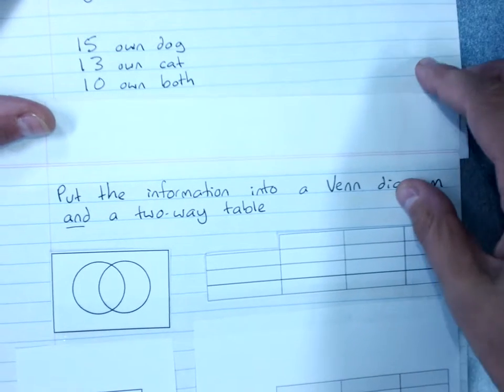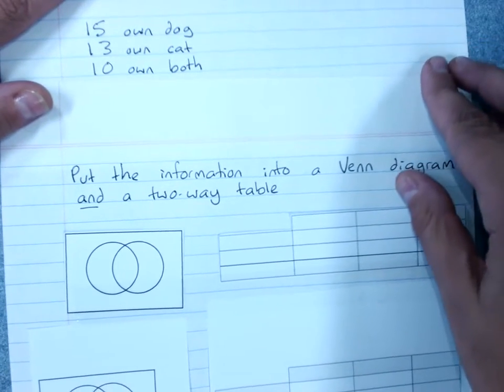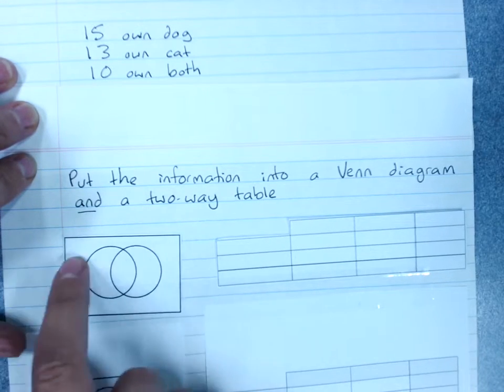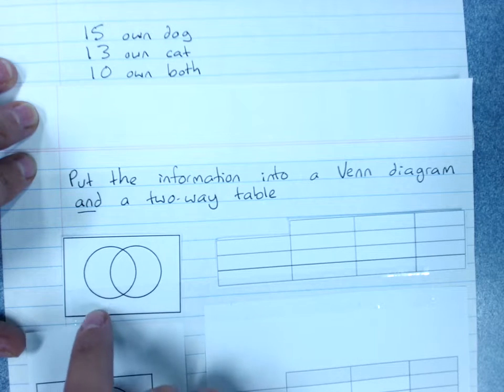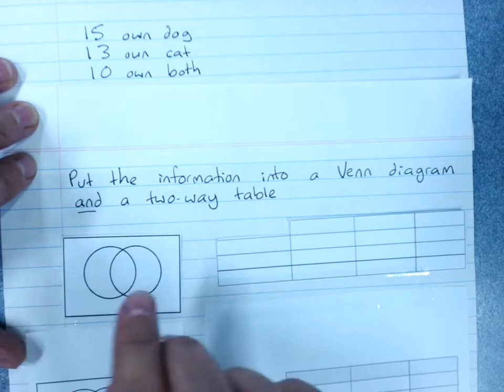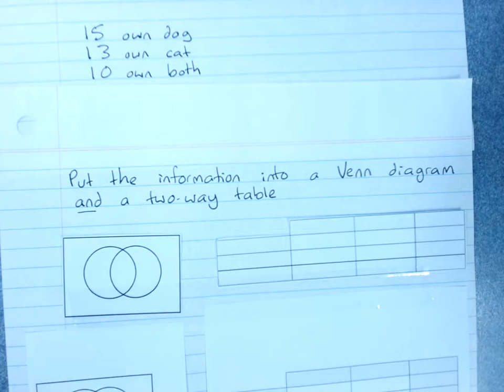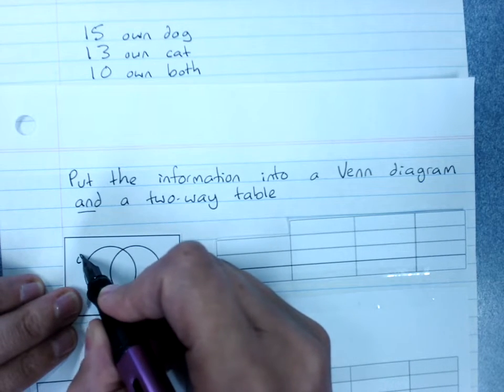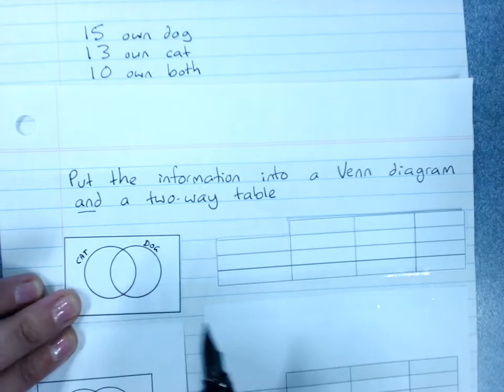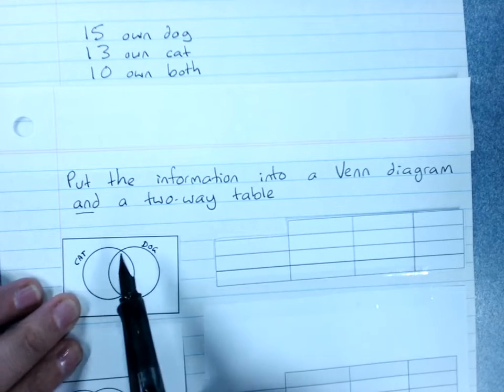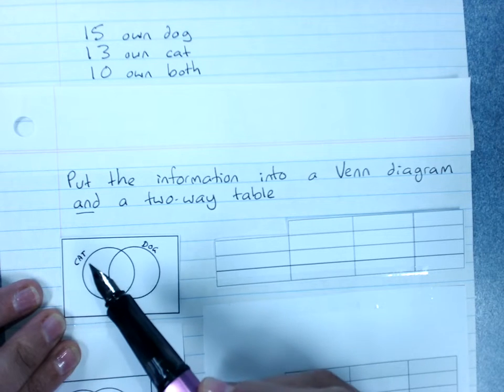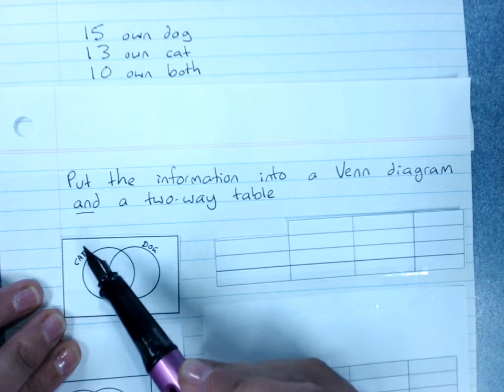Let's look at how this works. We want to be able to put this information into a Venn diagram and a two-way table. So a Venn diagram consists of a rectangle with overlapping circles. And each circle will be labelled with the event that is one of those questions that was asked. So this circle is going to be cat. And this circle is going to be dog. So in a Venn diagram, you label each circle with the event.